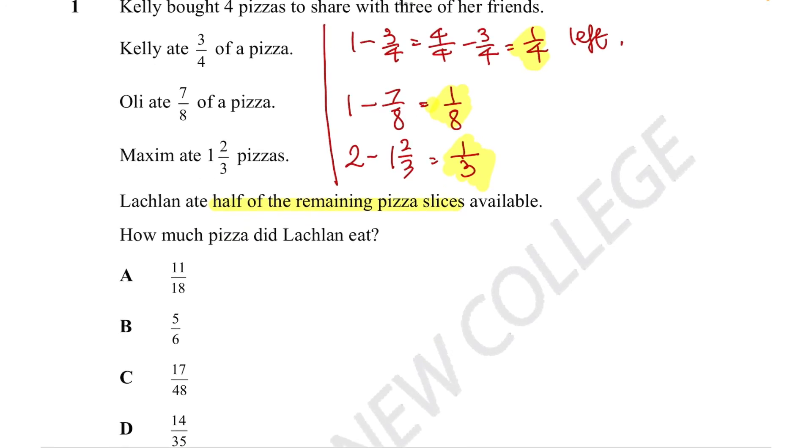If I try to change that into a number sentence, we would have one quarter plus one eighth plus one third, and half of that would be the amount of pizza Lachlan has eaten. Now, the issue here is all the denominators here are very different. So we need to convert these fractions into what's known as equivalent fractions to make sure that all the denominators are the same.